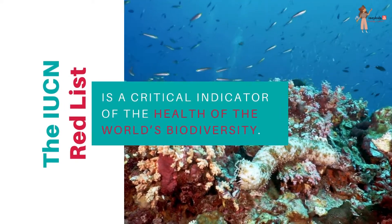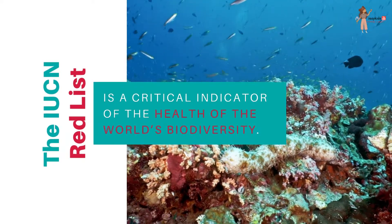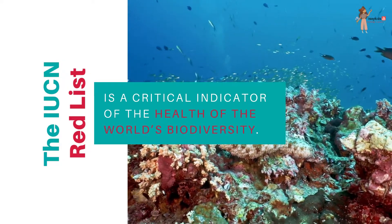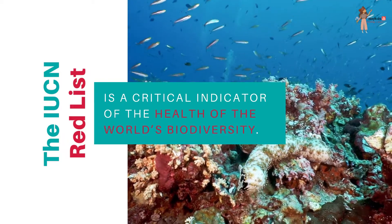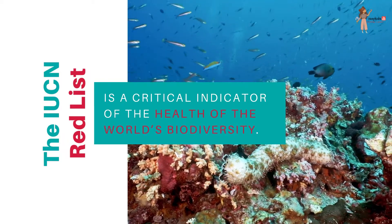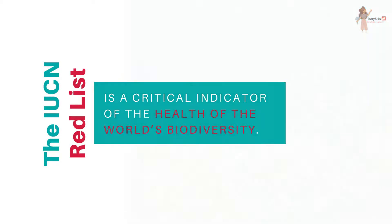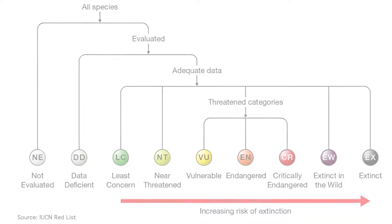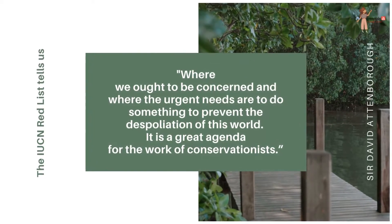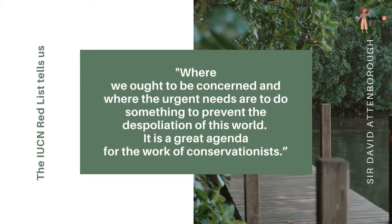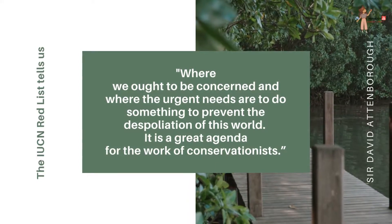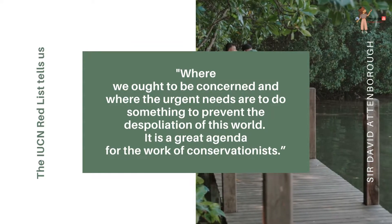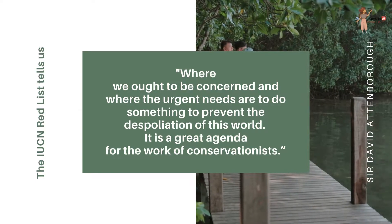The IUCN Red List is a critical indicator of the health of the world's biodiversity. Biodiversity is all the different kinds of life we find in one area — the variety of animals, plants, fungi, and even microorganisms like bacteria that make up our natural world. The Red List also tells us where we ought to be concerned, where the urgent needs are to prevent the despoliation of this world. It is a great agenda for the work of conservationists.